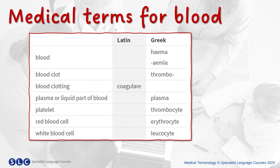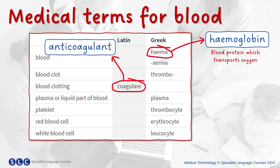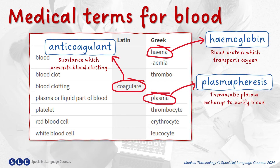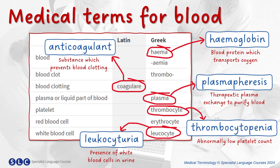Here are some more medical terms for blood. Notice the Latin and Greek terms which make up many common medical words. For example: hema — hemoglobin, a blood protein which transports oxygen. Coagulare — anticoagulant, a substance which prevents blood clotting. Plasma — plasmapheresis, a therapeutic plasma exchange to purify blood. Thrombosi — thrombocytopenia, abnormally low platelet count. And leukocytes — for example, leukocyturia, the presence of white blood cells in urine.